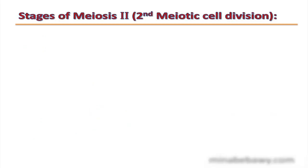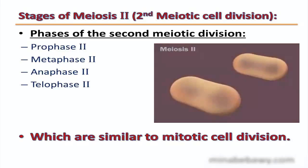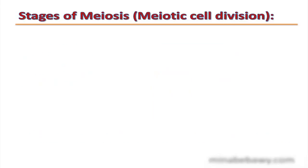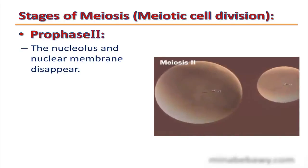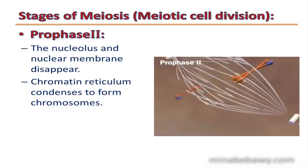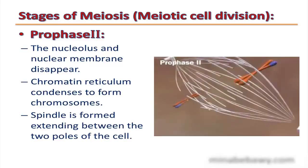The second stage of meiosis is meiosis 2, or the second meiotic cell division. Its phases — prophase 2, metaphase 2, anaphase 2, and telophase 2 — are completely similar to the phases of mitotic cell division. In prophase 2, the nucleolus and nuclear membrane disappear, chromatin condenses to form chromosomes, and the spindle is formed, extending between the two poles of the cell.